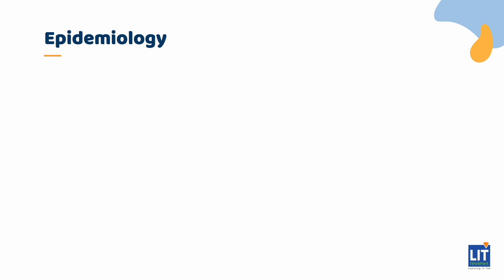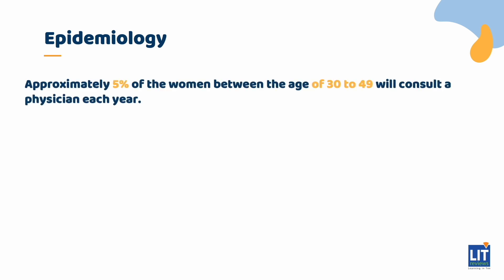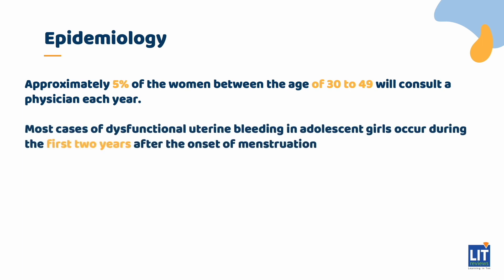AUB is a common gynecological problem. Approximately 5% of women between the ages of 30 to 49 will consult a physician each year. It is most common at the extreme ages of a woman's reproductive years. Most cases of dysfunctional uterine bleeding in adolescent girls occur during the first two years of the onset of menstruation, when their immature hypothalamic-pituitary axis may fail to respond to estrogen and progesterone, resulting in anovulation.